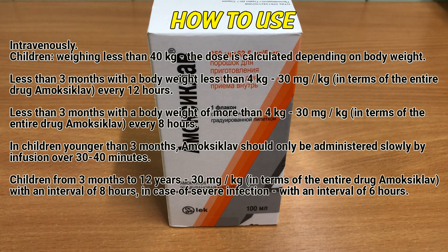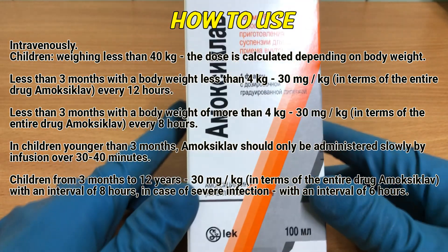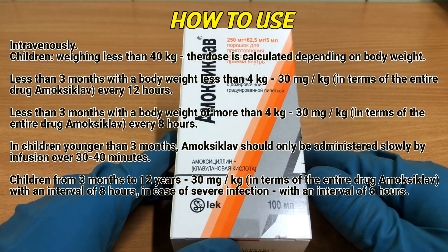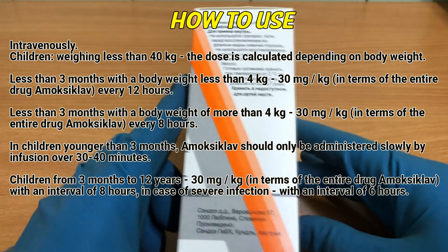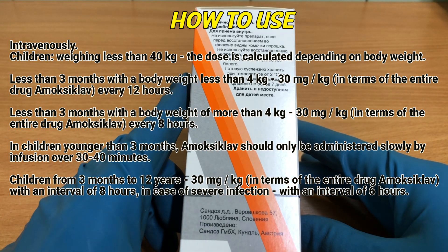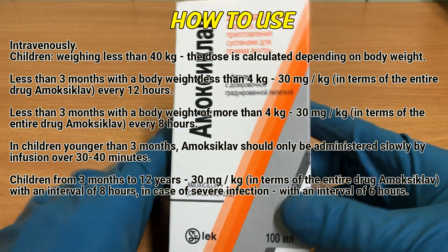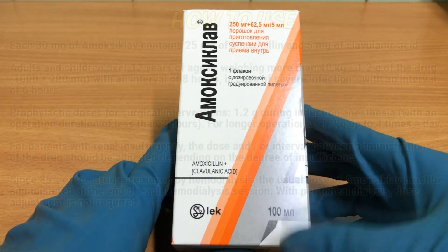In children younger than 3 months, amoxicillin should be administered slowly by infusion over 30 to 40 minutes. Children from 3 months to 12 years: 30 mg per kg in terms of amoxicillin with an interval of 8 hours. In case of severe infection, with an interval of 6 hours.